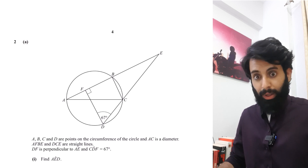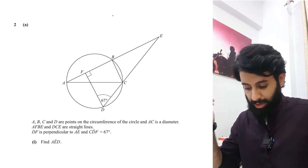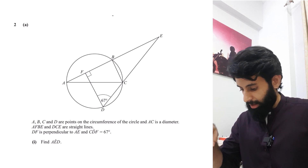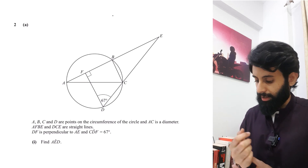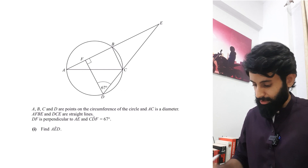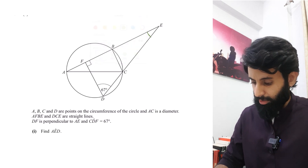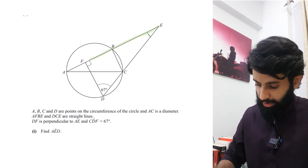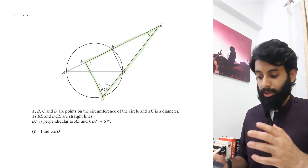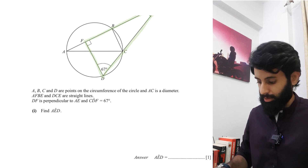The question says: A, B, C, and D are points on the circumference of the circle, and AC is a diameter. DF is perpendicular to AE, so they make a 90-degree angle. Angle AED is a one-mark question so it shouldn't be too difficult. I need to consider the triangle — the sum of interior angles is 180 degrees. I know two of the three angles, so I do 180 minus 90 minus 67, which gives 23 degrees.